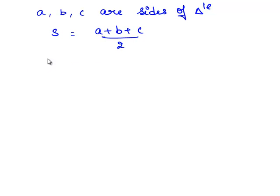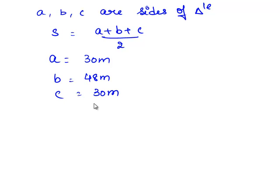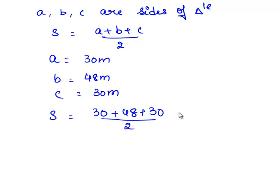So let a = 30 meters, b = 48 meters and c = 30 meters. We shall find the semi-perimeter: (a + b + c) ÷ 2 = 108 ÷ 2 = 54 meters.